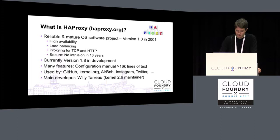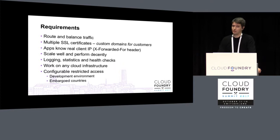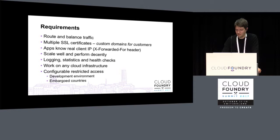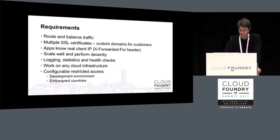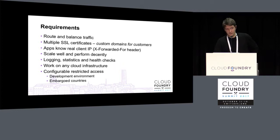Why do we need HAProxy? We obviously have to route and balance traffic. We have to be able to use multiple SSL certificates to support custom domains for our customers, so they can have multiple different domains in one Cloud Foundry installation. We also have the requirement that apps running on Cloud Foundry need to know the real client IP, so an X-Forwarded-For header must be set in the HTTP request containing the actual client IP. We also want to scale and perform well, have logging capabilities, and it should work on every cloud infrastructure. Additionally, we need to configure restricted access for development landscapes and in cases of trade embargoes.